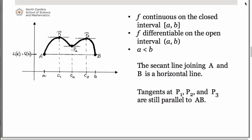You will notice once again that we have little tangent lines drawn at the points p₁, p₂, and p₃, and they are still parallel to each other, as well as to the secant line that joins points A and B.